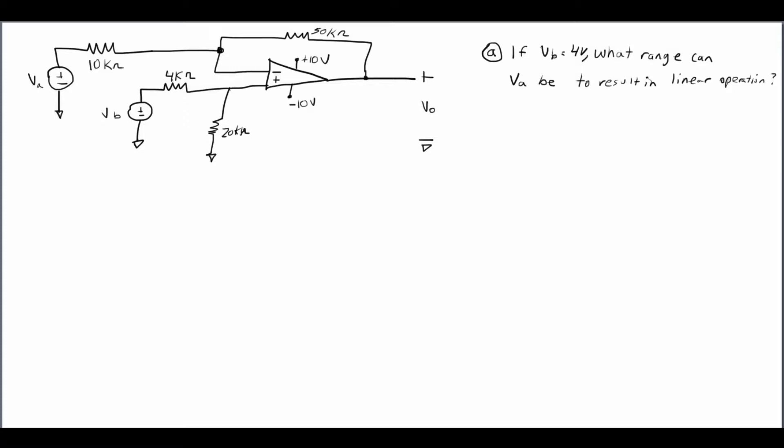We've got an op amp circuit here. You can see the positive and negative power rails are plus and minus 10 volts. We already know that the op amp can never go above or below the positive and negative power rails. If it's greater than or less than the power rails, it's in what's known as saturation — it will basically flat line at those values. Anything in between that range is called linear operation.